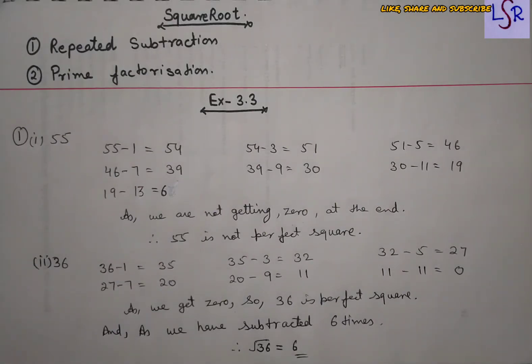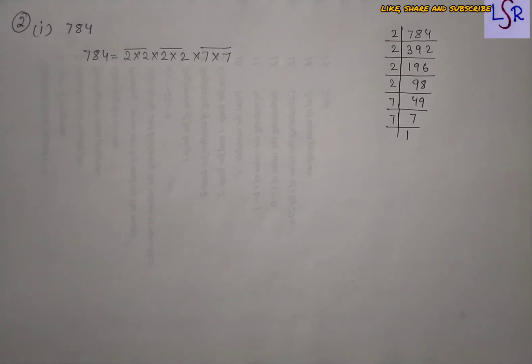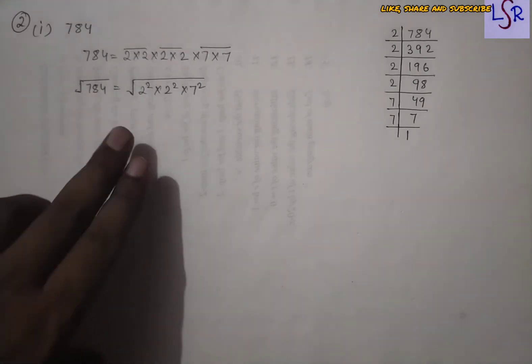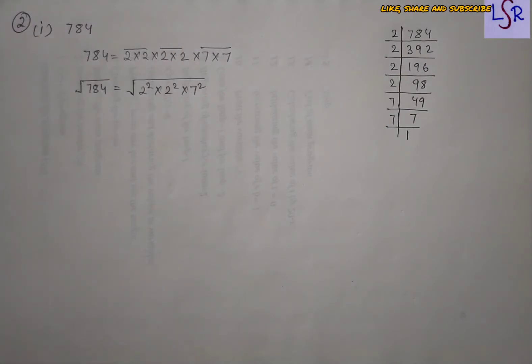Now for question number two, we have to find the square root of numbers using the prime factorization method. The first part is 784. We first find the prime factors of 784, then write them in the form of multiples, and make pairs of two numbers at a time. We write √784 = √(2² × 2² × 7²), the root cancels the squares, giving us 2 × 2 × 7 = 28. So √784 = 28.